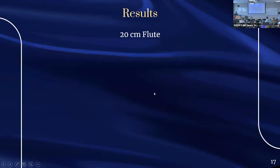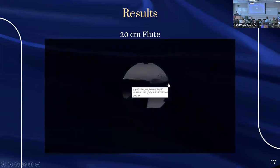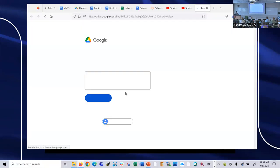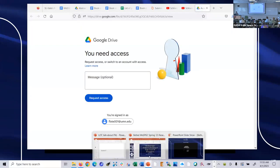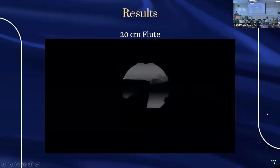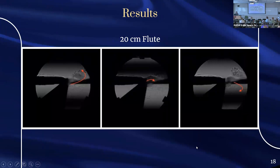The 20-centimeter flute looks very similar to the 10-centimeter flute but has a lower frequency. You can see a well-formed vortex that peels back into the airstream, colliding and pushing it down, a new one forming, and then another coming in on the bottom to push it back up, with the old one dissipating above.